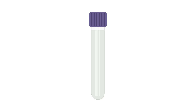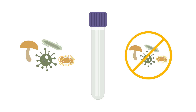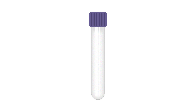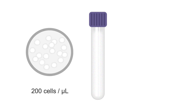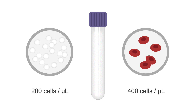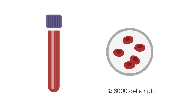Normal cerebrospinal fluid (CSF) is clear and colorless. Both infectious and non-infectious processes can alter the appearance of the CSF. Cerebrospinal fluid will appear turbid if as few as 200 white blood cells per microliter or 400 red blood cells per microliter are present.